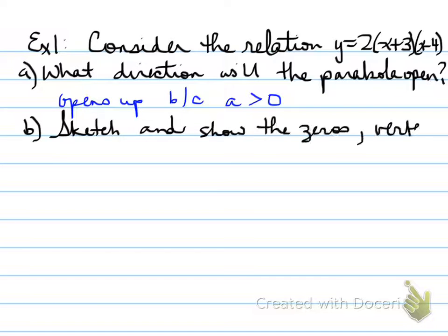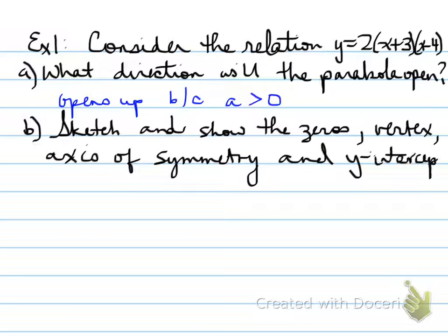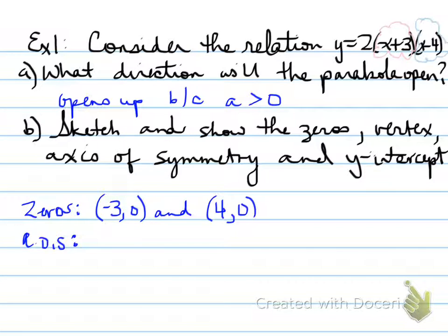Part B asks to sketch and show the zeros, vertex, axis of symmetry, and the y-intercept all on a graph. First of all, the parts of information that we're given are the zeros. We have x plus 3. What is the opposite of plus 3? It's minus 3. So negative 3, 0 is one of our x-intercepts. Looking in the other brackets, it says x minus 4, but when we pull it out, it becomes positive 4. So 4, 0 is our other intercept.